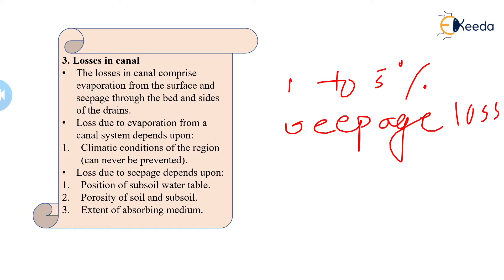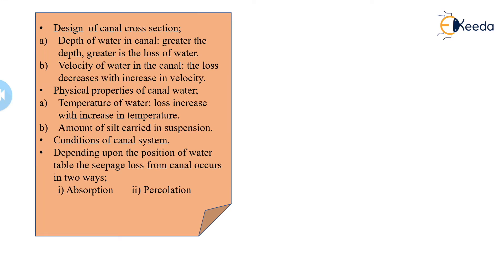The porosity of the soil and subsoil is another factor. Depending upon whether the soil is a porous one, it has maximum permeability rate, and because of this the water will get percolated easily and quickly. Then, the extent of the absorbing medium — the pores and voids that are available in the channel section or in the subsoil strata — is also responsible for the seepage loss.